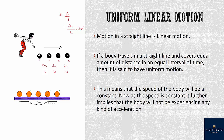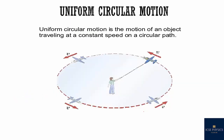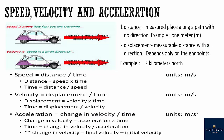As the speed is constant, it implies the body will not be experiencing any kind of acceleration — I will show this in a later slide. Now, uniform circular motion is the motion of an object travelling at a constant speed in a circular path. So what are speed, velocity, and acceleration?